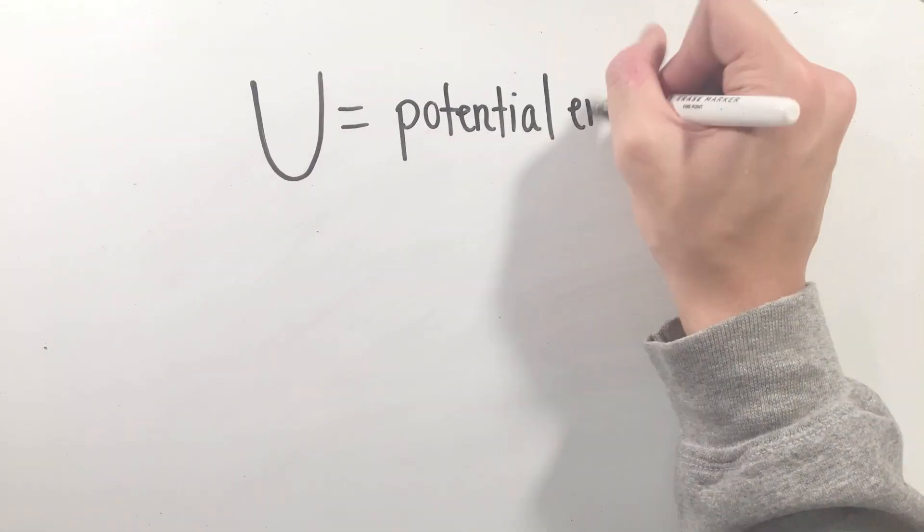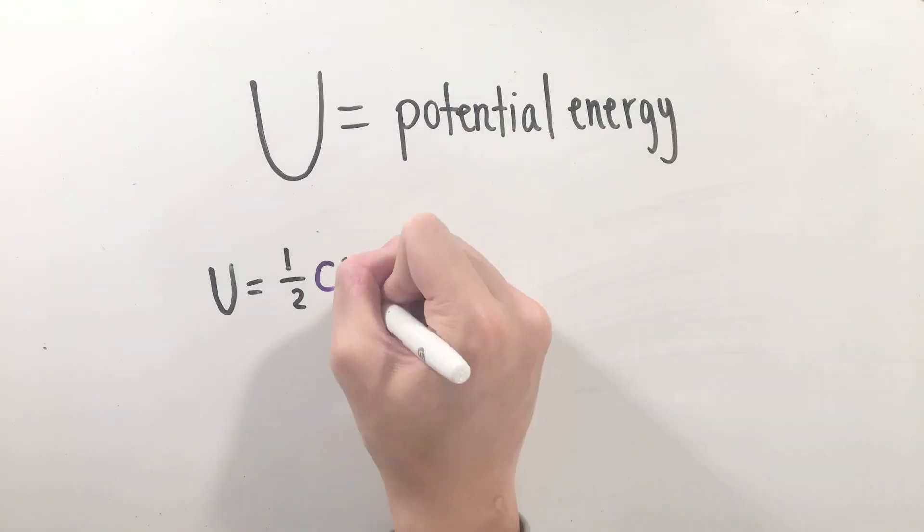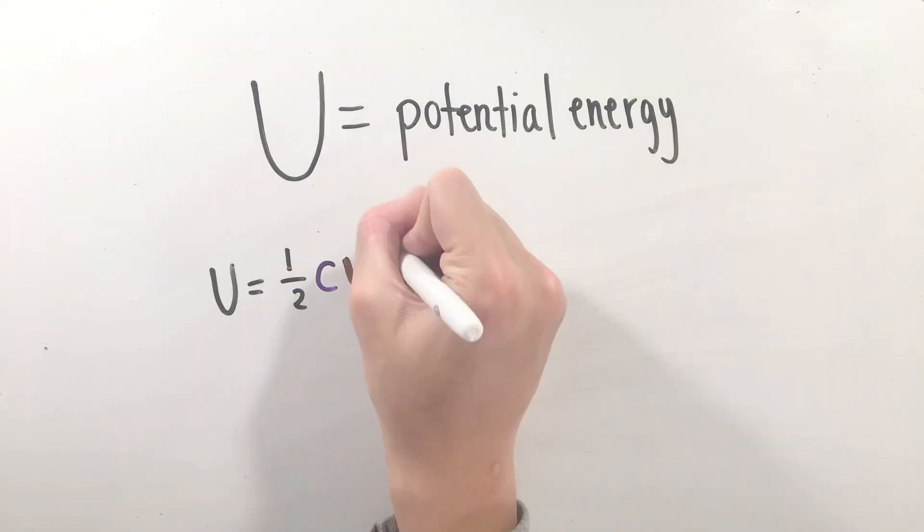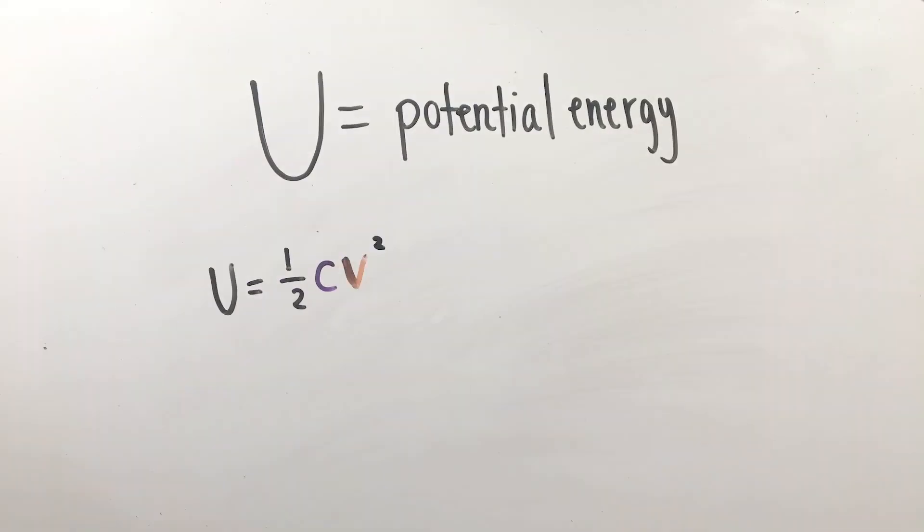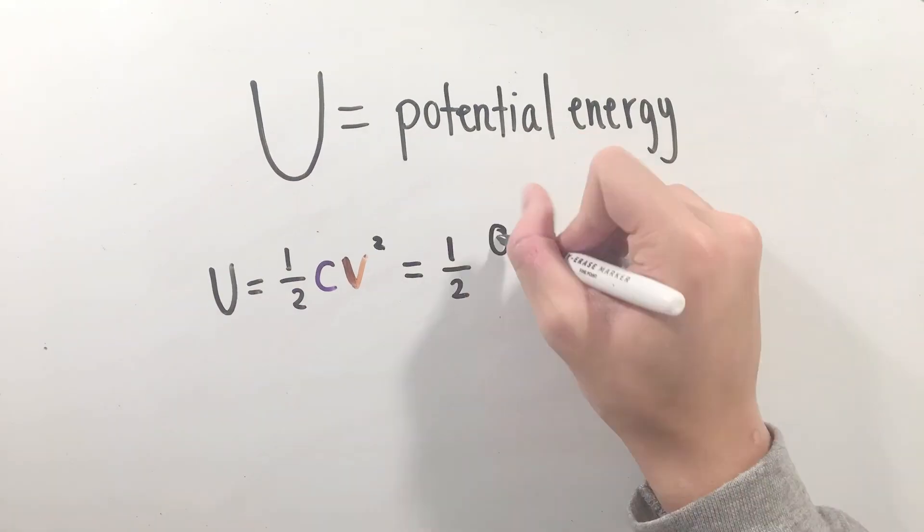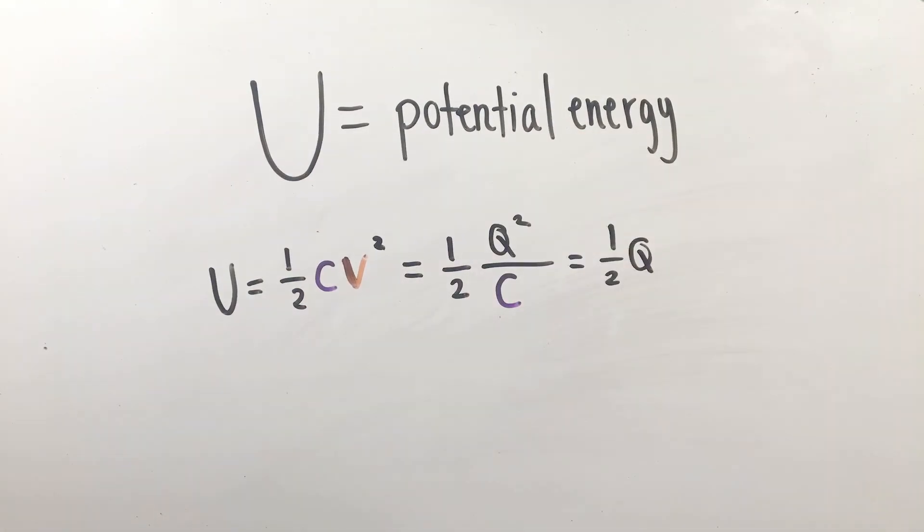One final important set of equations to note is that the potential energy stored within these capacitors, U, is equal to one-half CV squared. Now, this equation can easily be used in tandem with Q equals CV, giving a multitude of different forms for the potential energy. So, use whichever form has the most variables given to you in the problem.